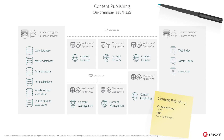In situations where the reliability and performance of content publishing is extra critical, it's recommended to deploy the optional content publishing service on a separate server or service. This unloads the publishing process from the content management roles and increases the throughput of publishing significantly. To reduce latency for optimal performance, place the content publishing role as close to the master database as possible. Note that multiple content publishing roles can be deployed for reliability or resilience; however, multiple content publishing roles will not increase performance or throughput additionally.